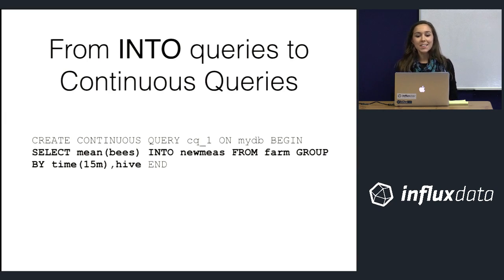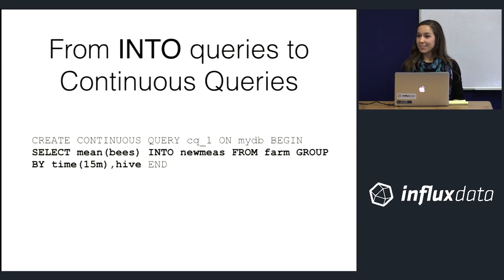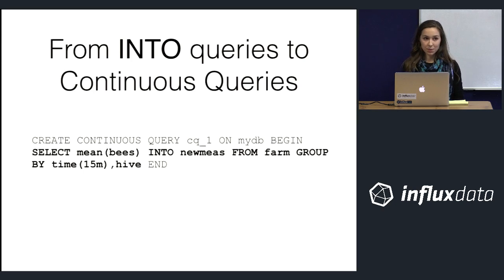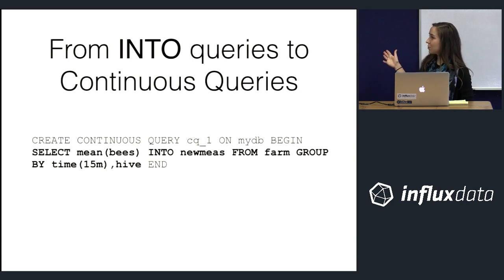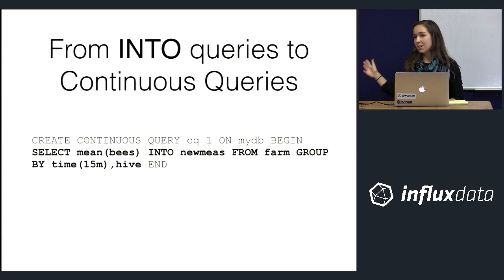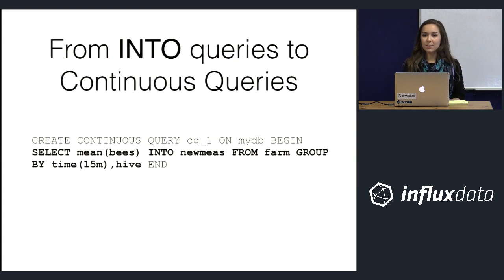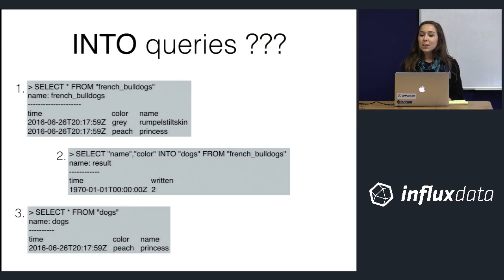If you're thinking 'great, now I have to run two queries instead of one' — not necessarily. You can turn INTO queries into continuous queries. InfluxDB's continuous queries run automatically and periodically on the database. The syntax shown here would run every 15 minutes automatically, so you'd be back to only having to manually execute one query to get the information you're after.